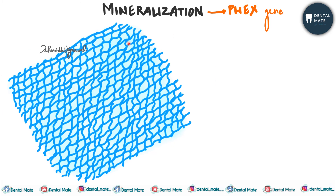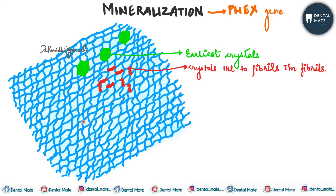These earliest crystals are fine plates of hydroxyapatite on the surface of the collagen fibrils or in the ground substance. Subsequently, crystals are laid within the fibrils themselves in an orderly fashion, with the long axis of the crystals parallel to the fibrils.